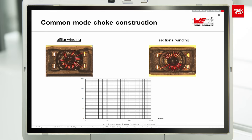If you compare the sectional and bifilar with the same inductance value, you will see they have almost the same common mode rejection — with a small tolerance, as this is a measured value. But the big difference is the leakage inductance, the differential mode impedance. For a signal at 10 MHz, with a sectionally-wound choke you already have an attenuation of 20 ohm on the signal. With a bifilar-wound method and the same common mode choke, at 10 MHz you have almost nothing — you cannot even measure it. So very low leakage means very low attenuation to your signal.